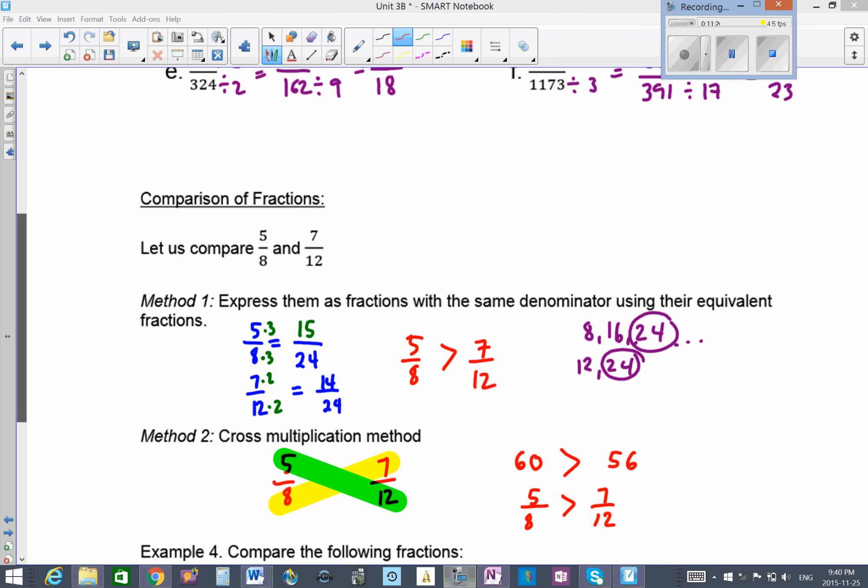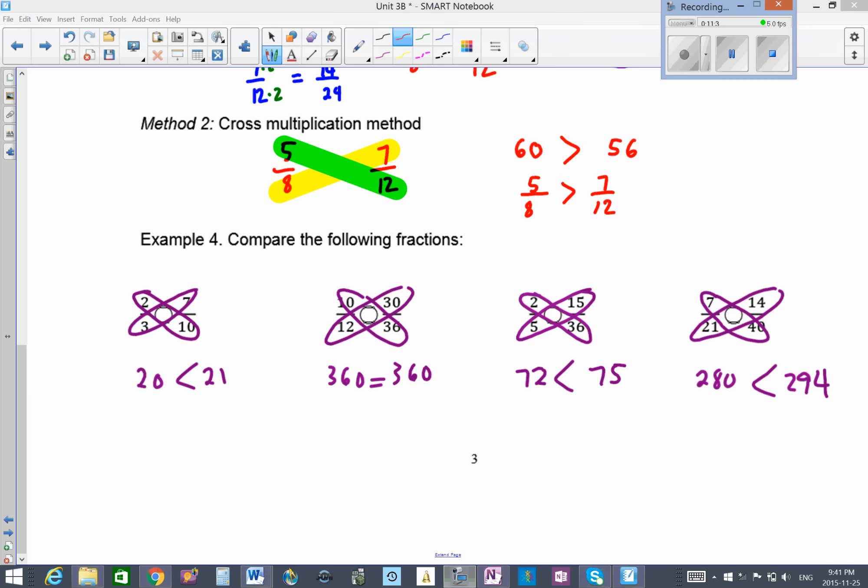You should pause this video and try to do example 4 on your own. Here's the answer here. Sorry, I did everything using cross multiplication. Let's just make the conclusion. 2 times 10 is 20, 3 times 7 is 21. So we say 2 thirds is less than 7 over 10.